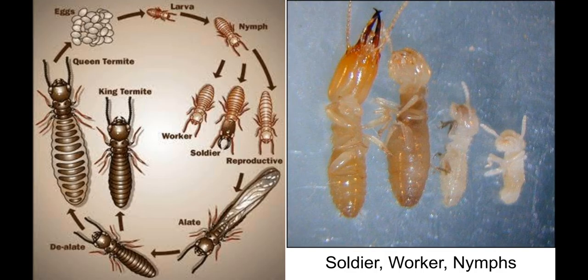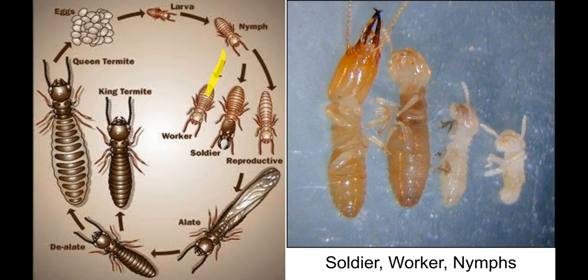If overproduction of one caste occurs, selective cannibalism restores the balance — workers will kill and eat some young nymphs that are already in excess. The reproductive termites, the founders of the colony, produce eggs. From eggs they get larvae, roughly the same size as the egg. The larva then grows and turns into a nymph. The nymph can develop into any caste — worker, soldier, or reproductive — depending on their food. All these nymphs are genetically identical.